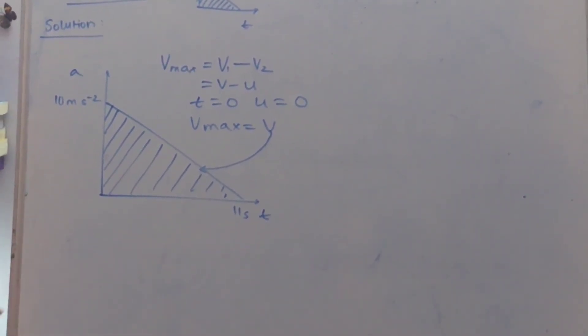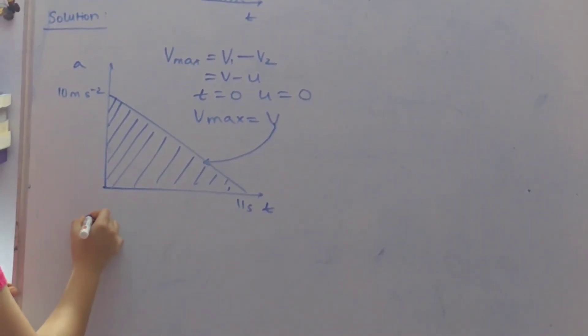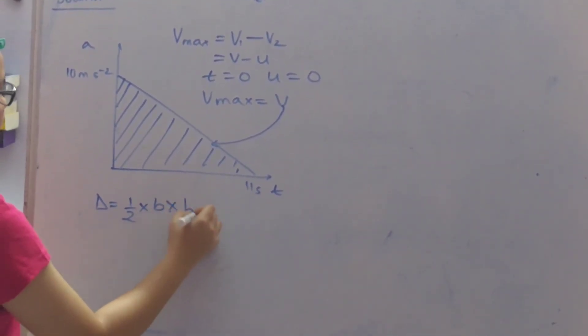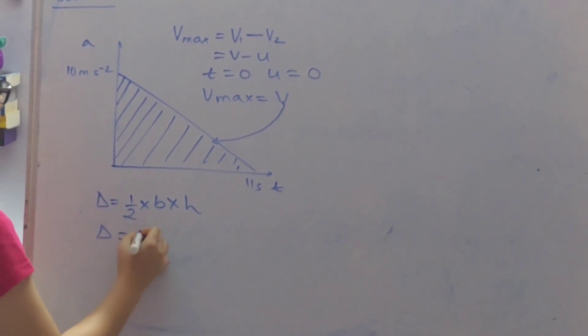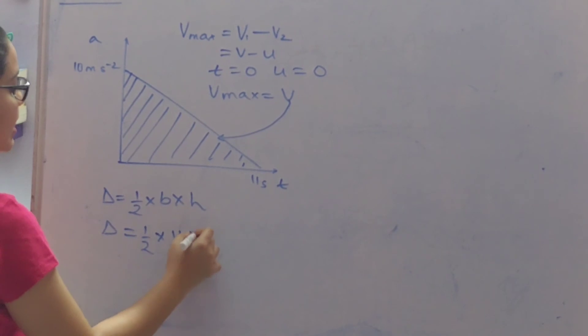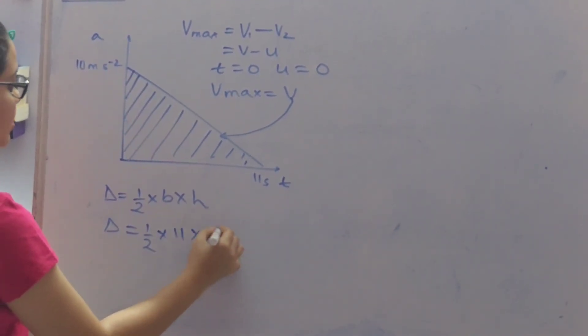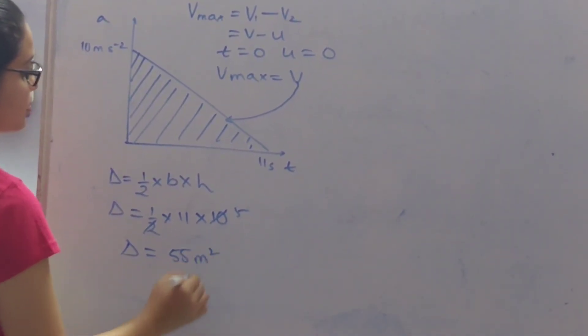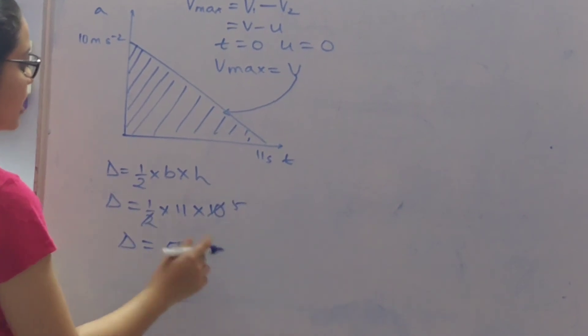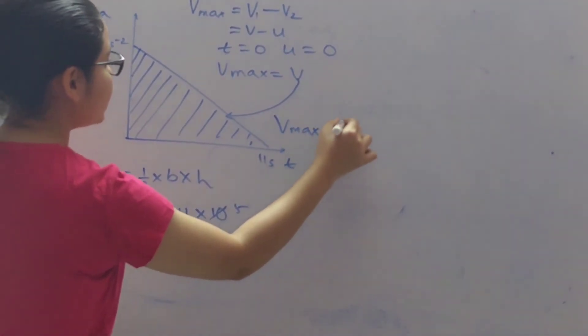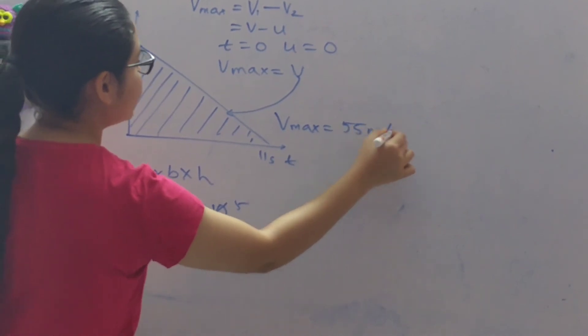So we use the standard formula, area of a triangle is given by half into base into height. So here what is base, it is 11 that is the time. So we will get the area of triangle as 55 meter square, and if you will convert it into velocity the units for velocity will be meter per second so we will get 55 meter per second.